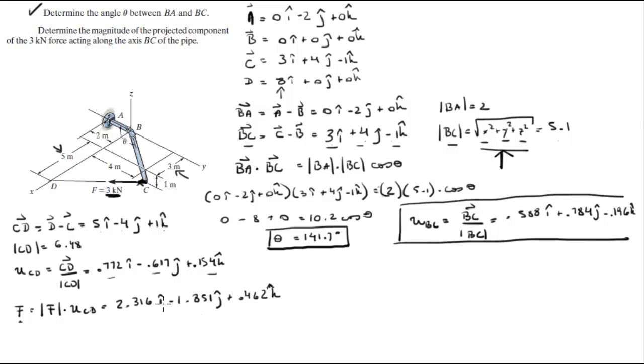Now that we have the force vector you can find the projection along BC by doing the dot product of F times the unit vector BC, which was the unit vector we found here. So it's 2.316i minus 1.851j plus 0.462k dot 0.588i plus 0.784j minus 0.196k.